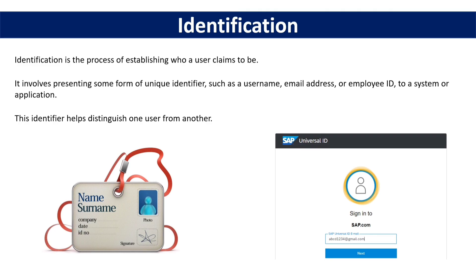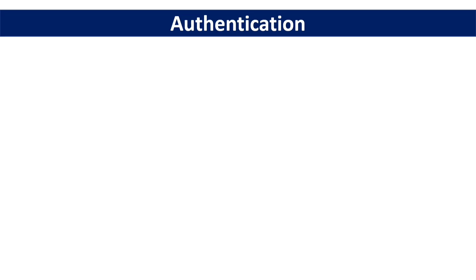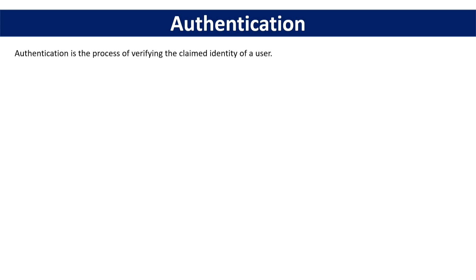Once a user is identified, we move on to authentication. Authentication is the process of verifying the claimed identity of a user. Suppose you have provided an email address — in authentication, you need to provide the password as well for that email address. It ensures that the person who is logging in is indeed the same person they claim to be.